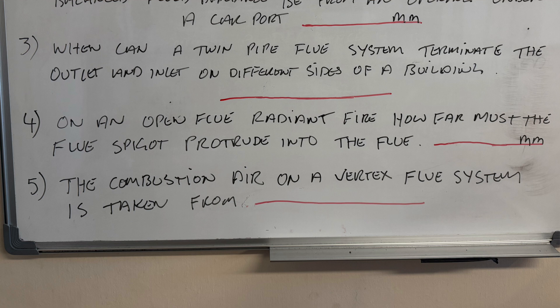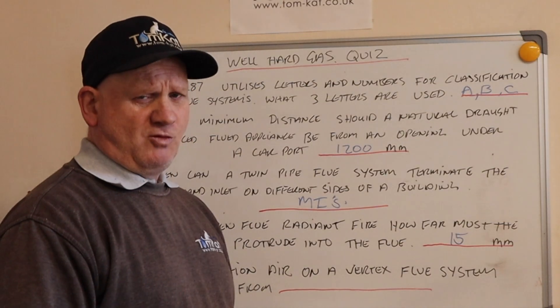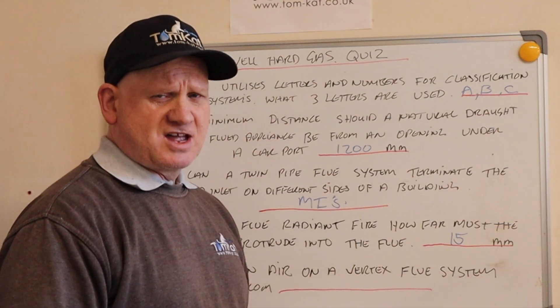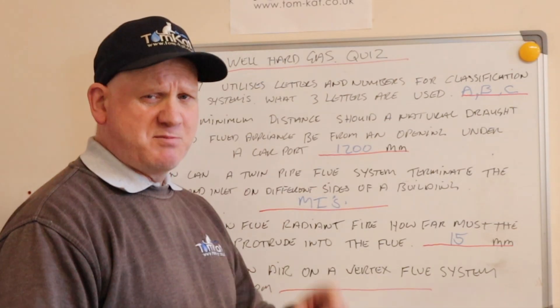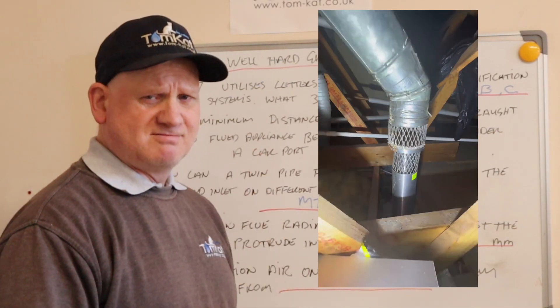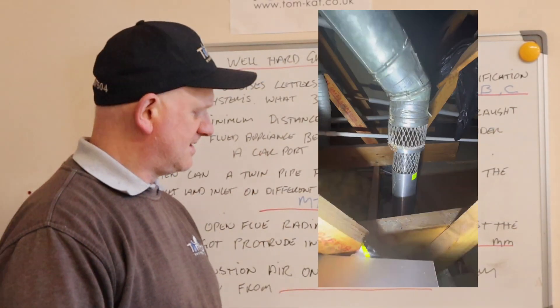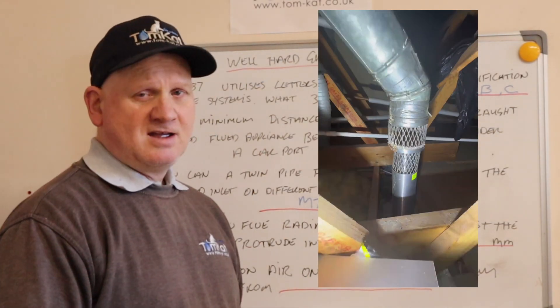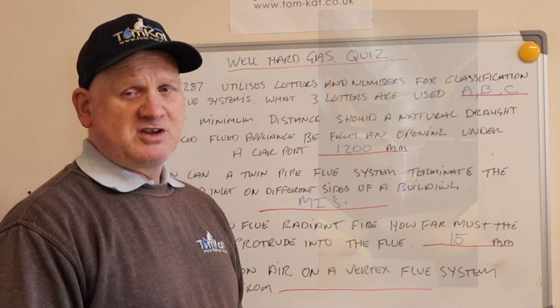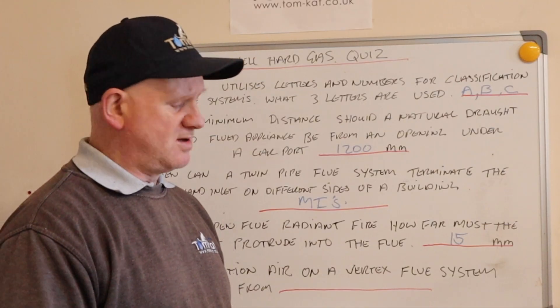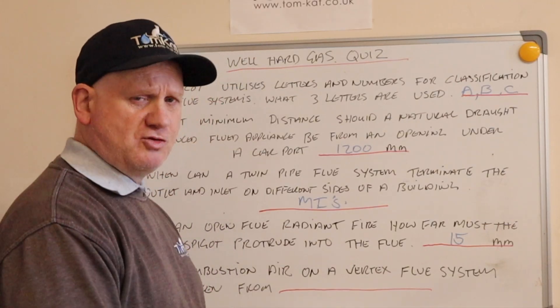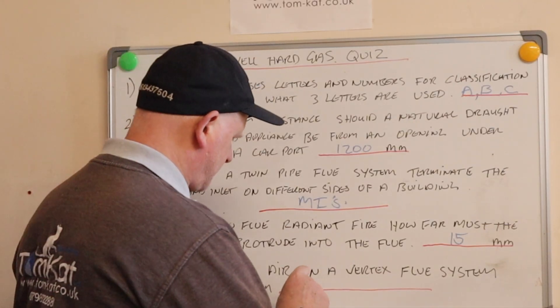Question number five: the combustion air on a vertex flue system is taken from where? Hopefully you know what a vertex flue system is — here is a picture of it. The air for combustion is taken from the roof space.